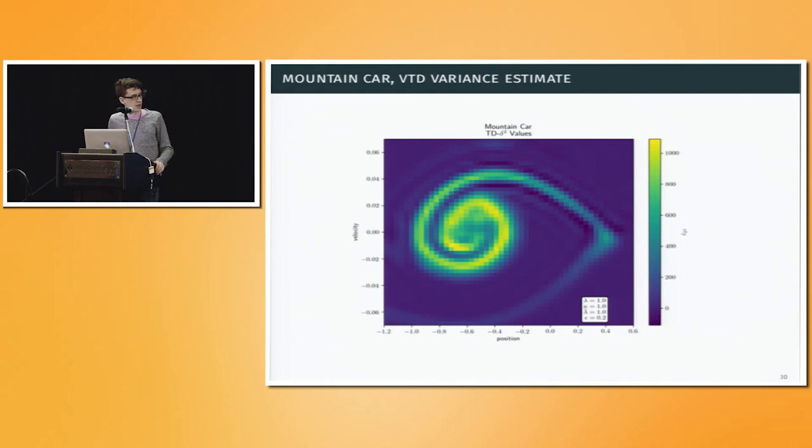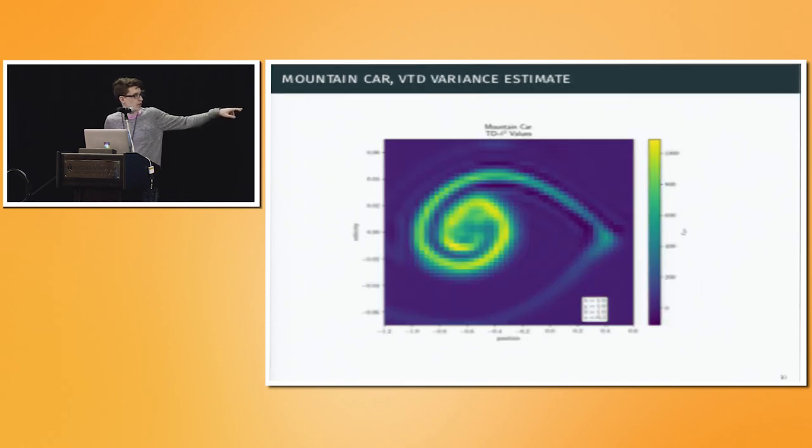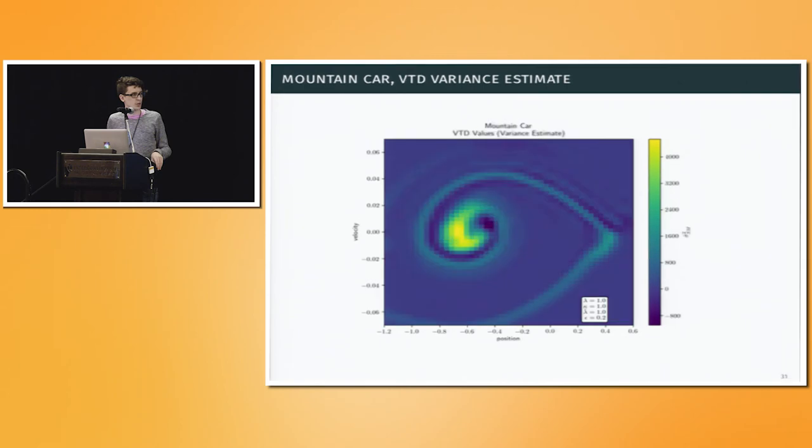Here we have our DVTD algorithm, the direct one, and we see that it actually seems to grasp this. It learns an estimate of the variance that reflects what our intuitions tell us, what the graphs tell us. If you look at the scales on the graph, it's about approximately equal. It's not perfect, but this is function approximation, and we're comparing a good discretization versus just what the agent was able to learn.